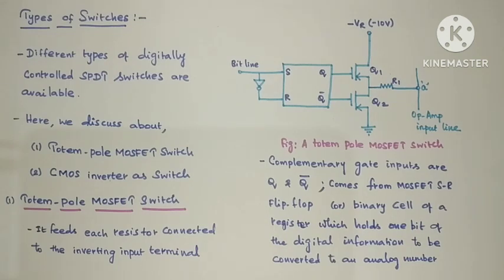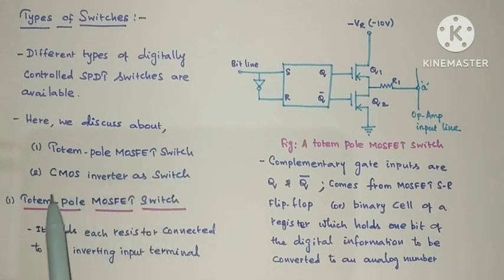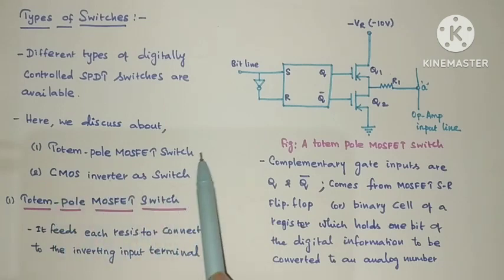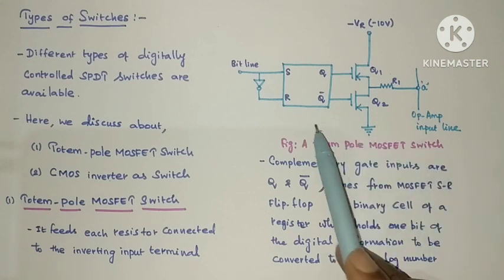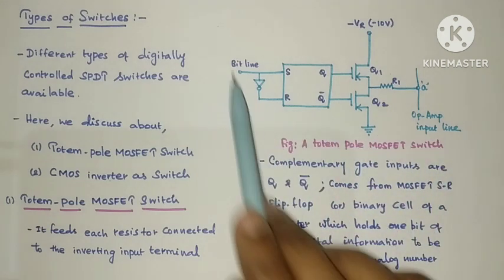When we consider these types of switches, many types are available. But today we will discuss only two different types: one is the totem pole MOSFET switch, and the other one is the CMOS inverter as a switch. We will see each topic one by one, starting with the totem pole MOSFET switch. The diagram for the totem pole MOSFET switch is shown here.